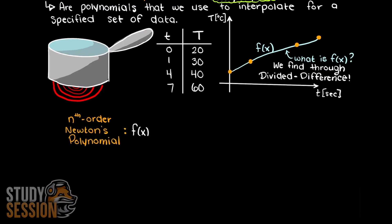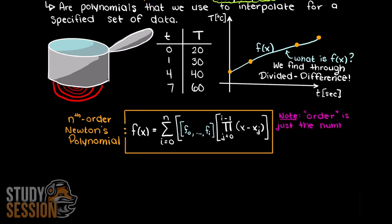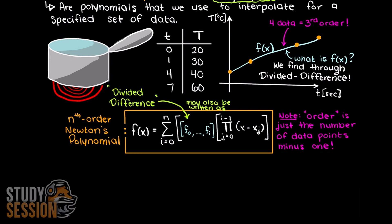The general formula for an nth order Newton's polynomial is written here, where n is our order of the Newton polynomial, which is simply the number of data points that we have minus 1. To solve a Newton's polynomial, all we are going to do is find the coefficients highlighted here. These coefficients can be written in many ways; however, they all mean the same thing, and they are called our divided differences, hence the name.